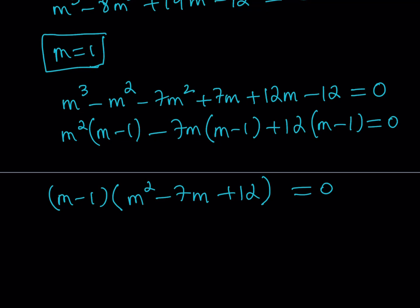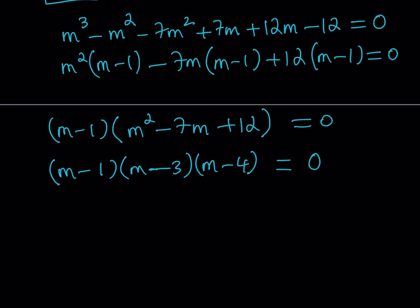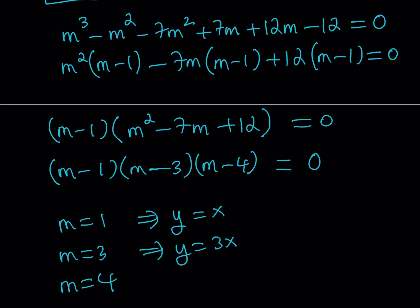The second factor is a quadratic: m squared minus 7m plus 12, which factors as (m minus 3)(m minus 4), since we need two numbers whose product is 12 and sum is negative 7 — those are negative 3 and negative 4. So the three m values are: m equals 1, m equals 3, m equals 4. Since y equals mx, the first gives y equals x, the second gives y equals 3x, and the third gives y equals 4x. We have three sets of solutions.